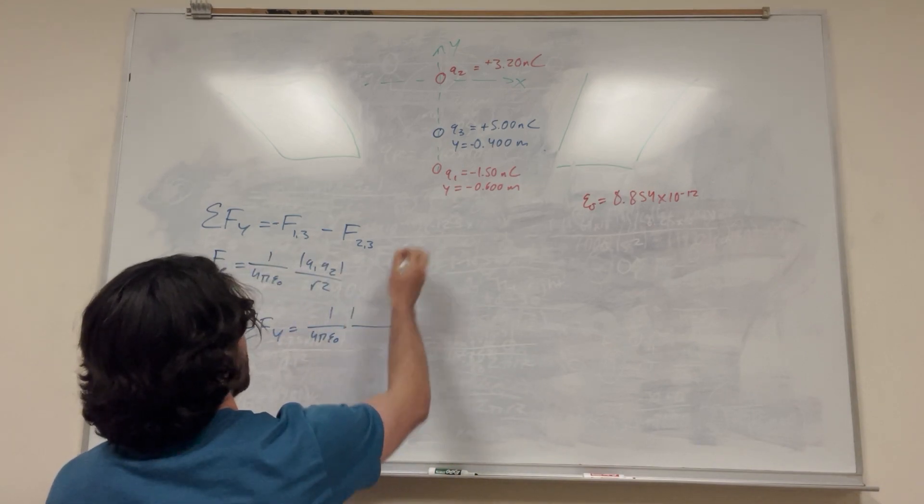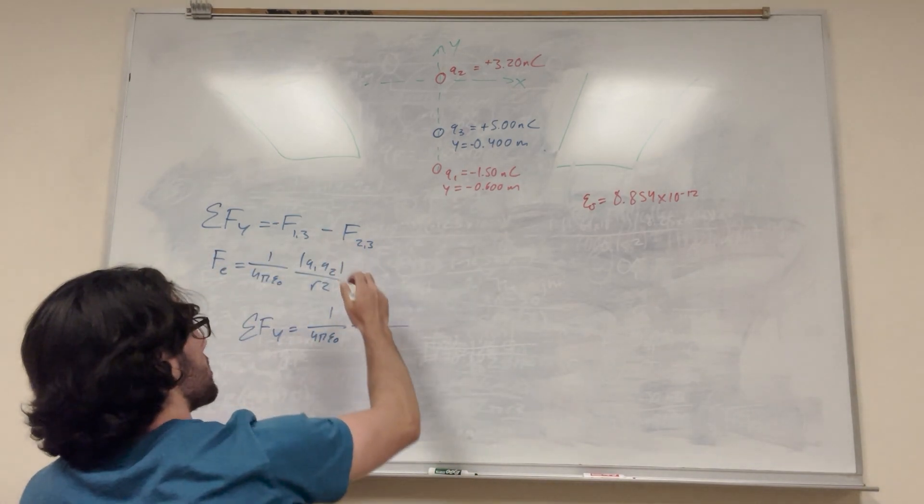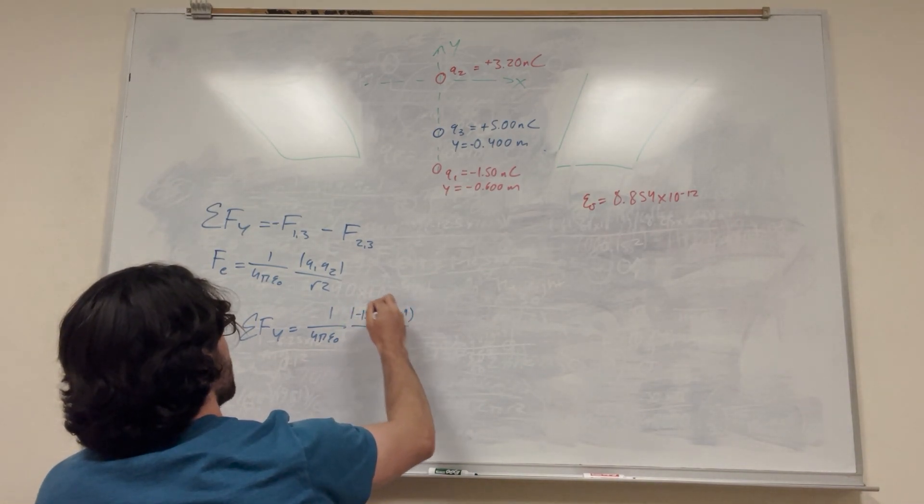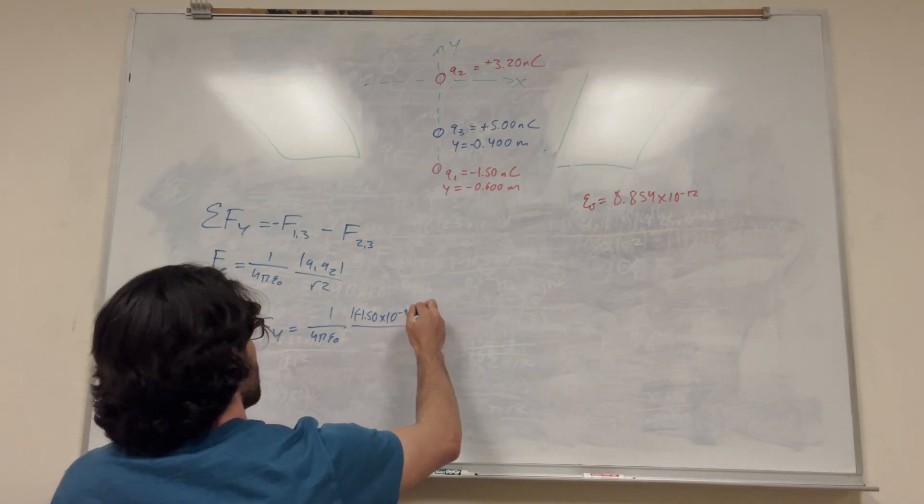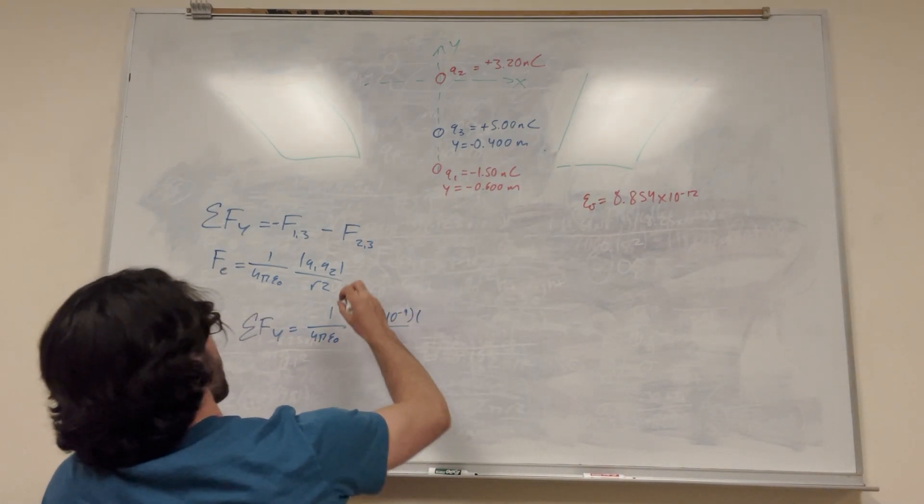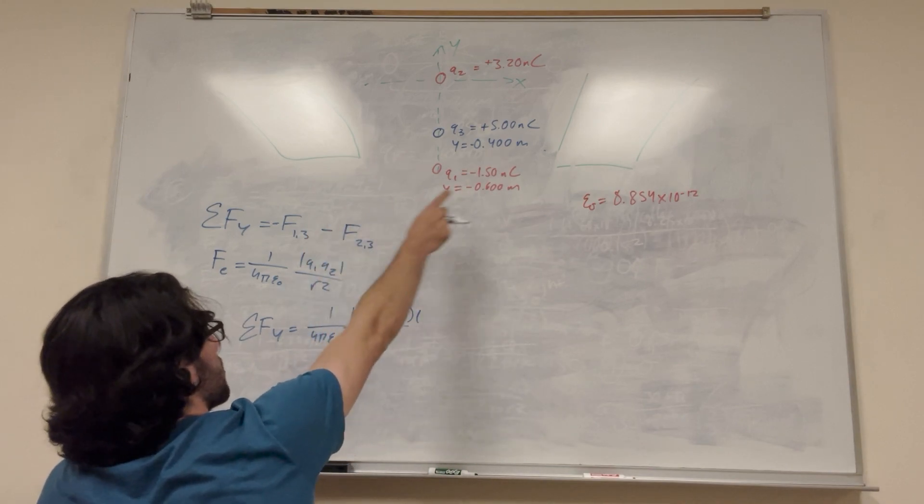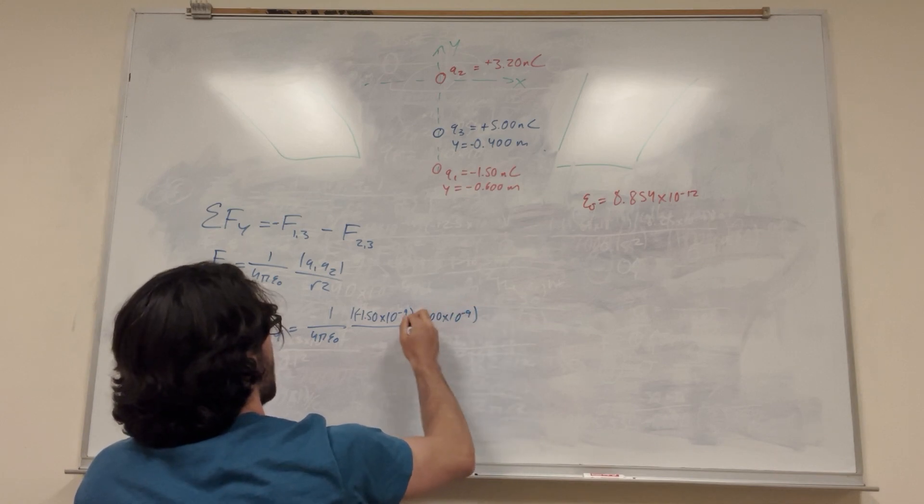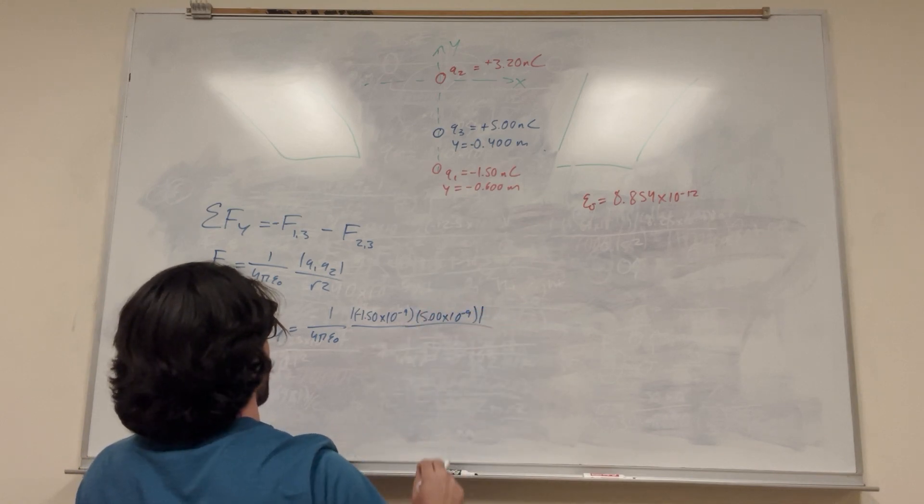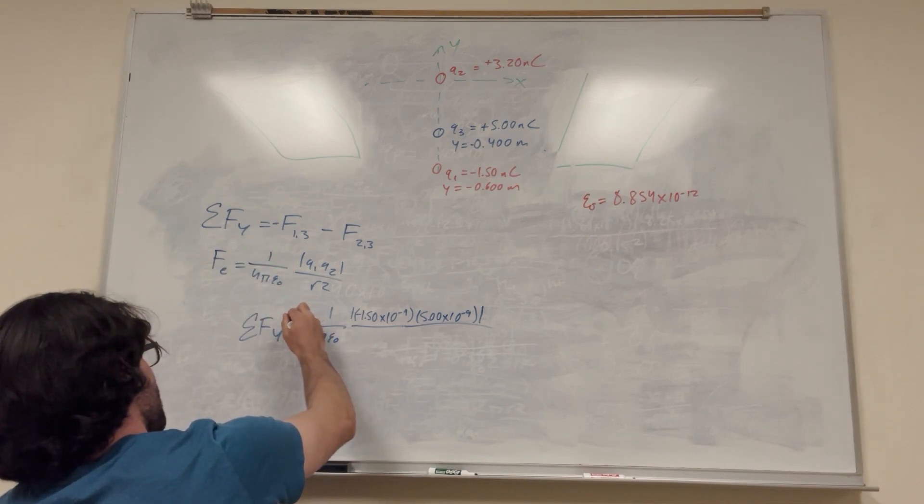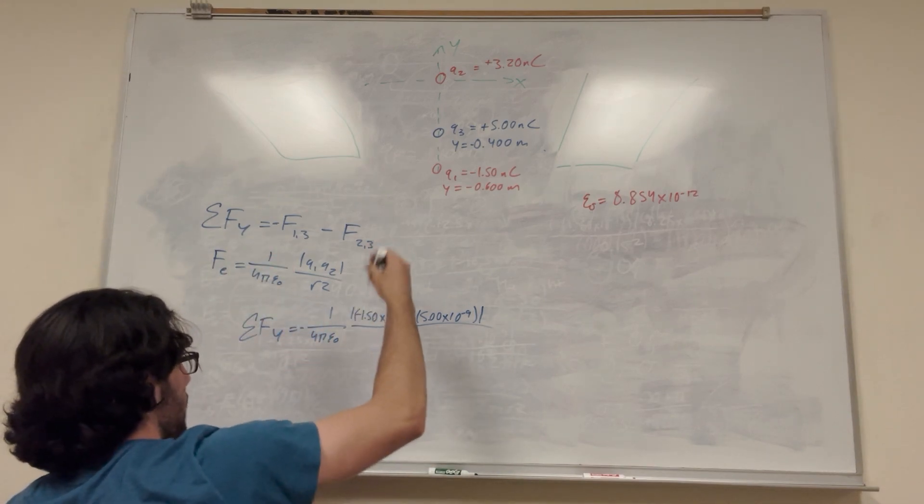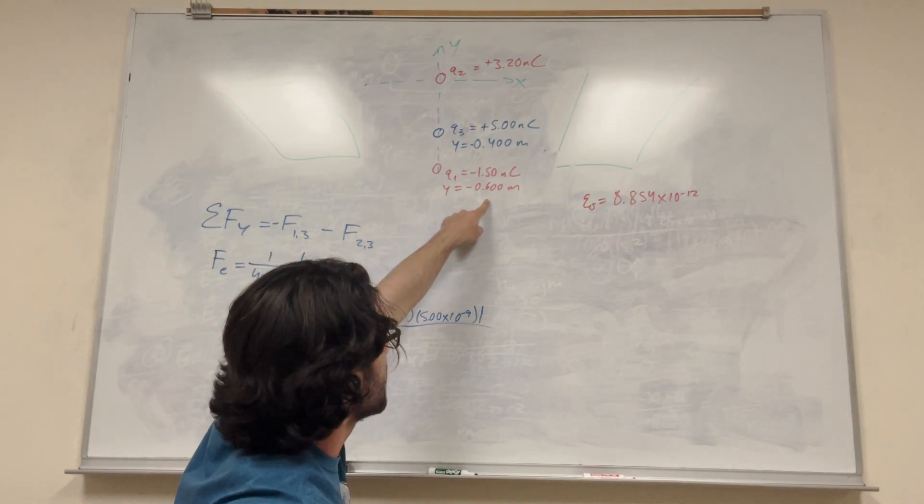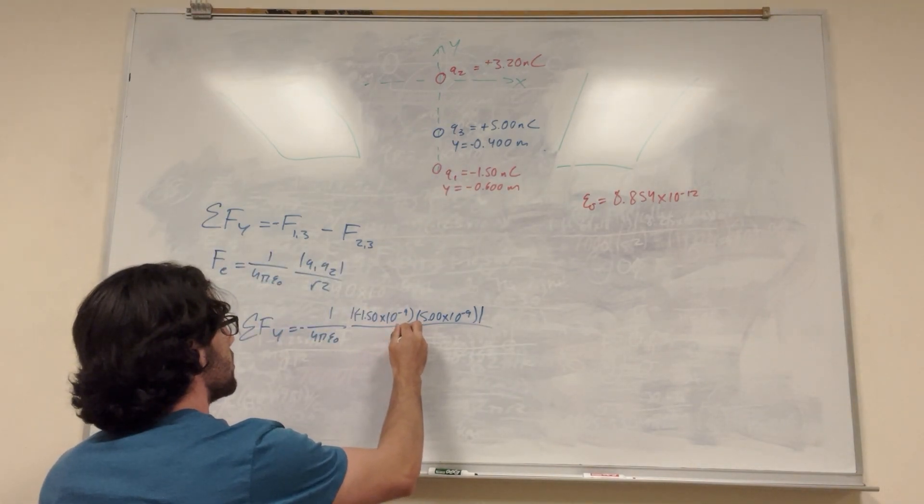So Q1 - we're looking at 1 on 3, so it's going to be negative 1.50 times 10 to the negative 9, converting it to normal coulombs, not nanocoulombs, times the charge of 3, 5.00 times 10 to the negative 9. We're going to put that in absolute value just to get a positive number, but we're looking for the subtraction, so we need to make sure that this is negative out front because it's pulling it down. The radius between these two is 0.6, 0.4, so it's going to be 0.2 meters squared.